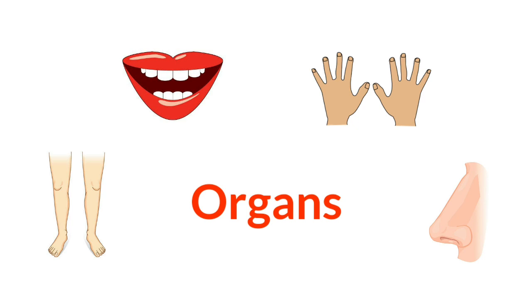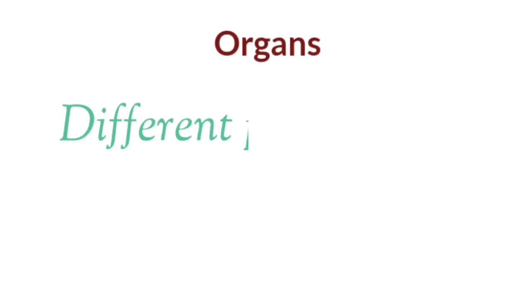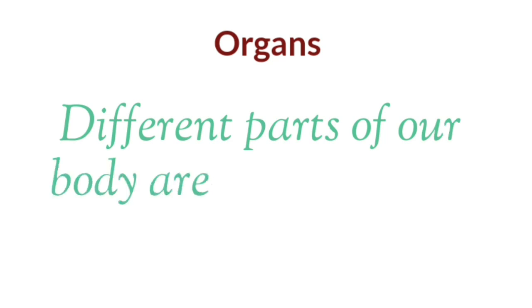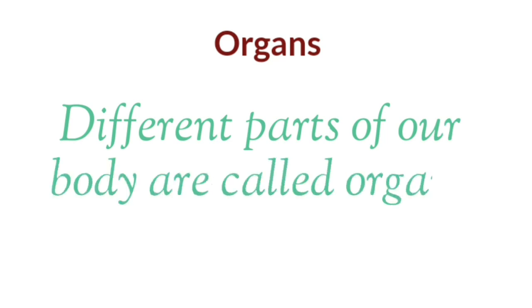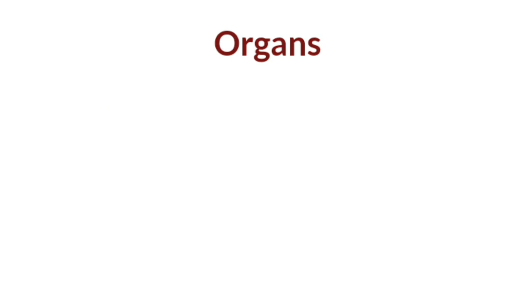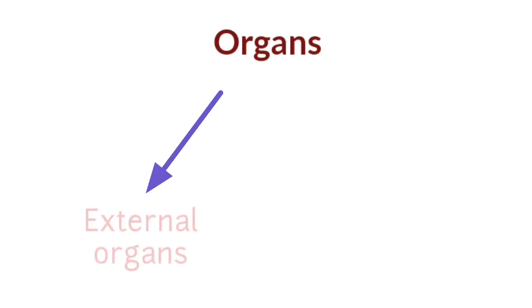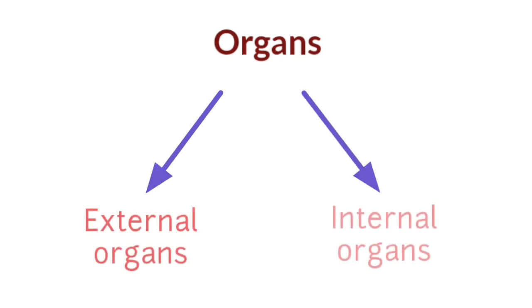So children, tell me, what are organs? Different parts of our body are called organs. You know children, our body is divided into two types of organs. They are external organs and internal organs.